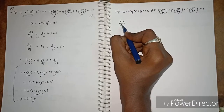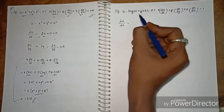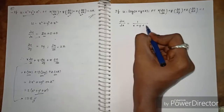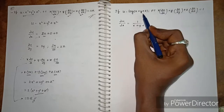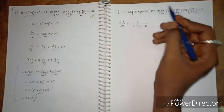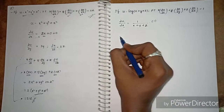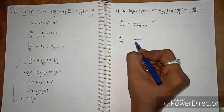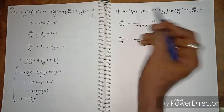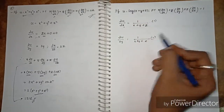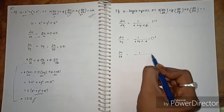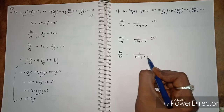For u = log(x + y + z), differentiating with respect to x gives ∂u/∂x = 1/(x + y + z), since the derivative of log is 1 over the function. Similarly, ∂u/∂y = 1/(x + y + z) and ∂u/∂z = 1/(x + y + z), treating the other variables as constants.